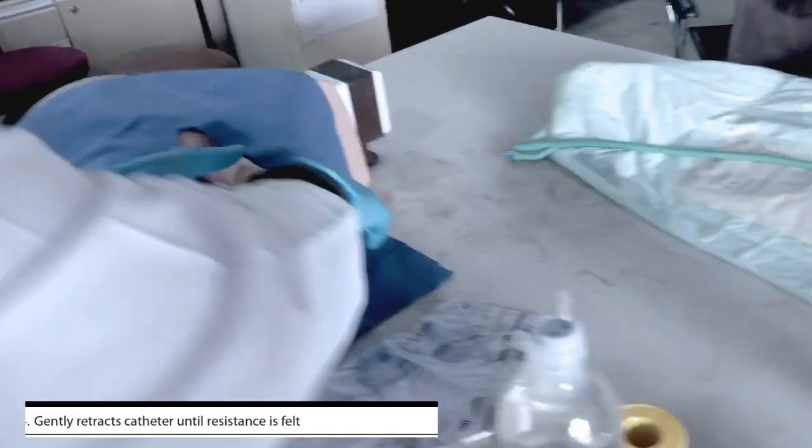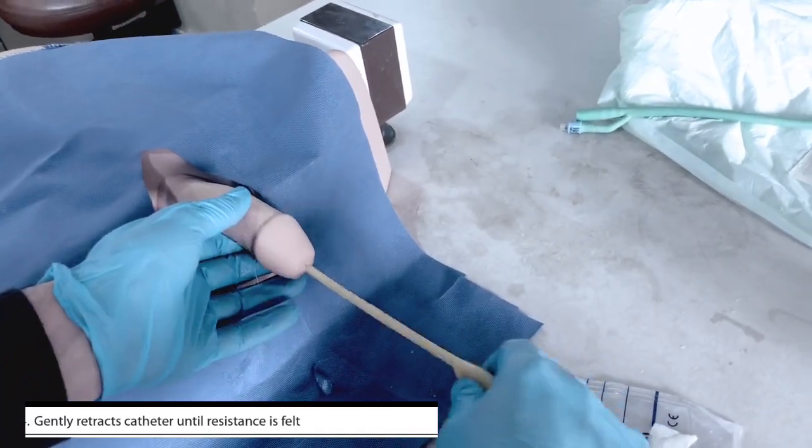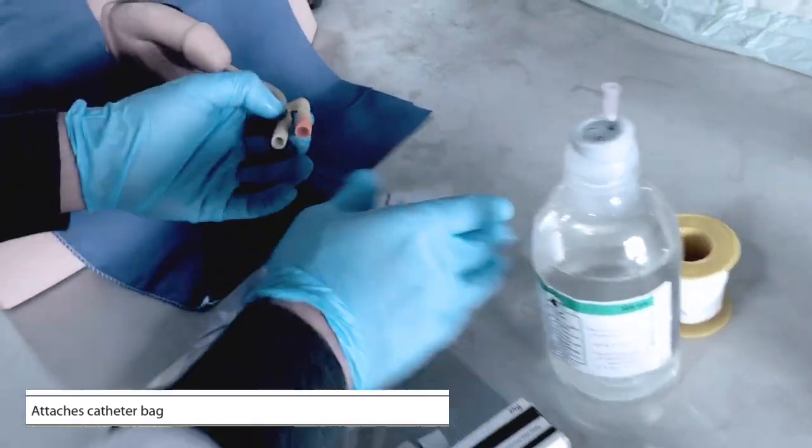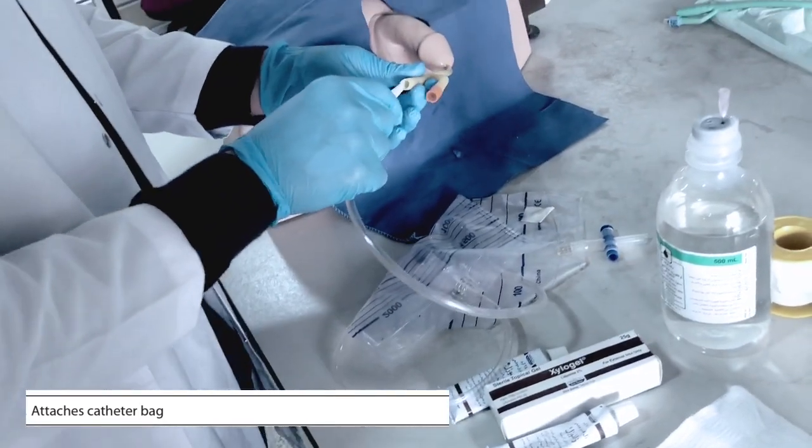Then we retract the catheter until we feel the resistance. Then we insert the catheter into the urine bag.